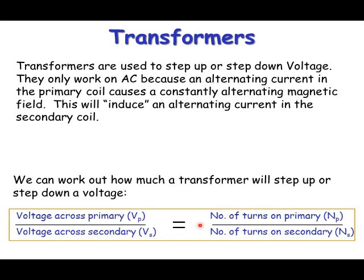This transformer equation will be printed on the exam. If you look on the right, the number of turns on the primary divided by the number of turns on the secondary will give you the ratio of the turns, and that is equal to the ratio of the voltage. So if you had the same number of turns on each, you'd get the same voltage on each. If it stepped up so the secondary had twice as many as the primary, then the voltage would have twice as many as the primary.